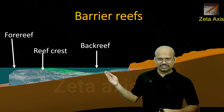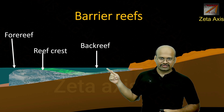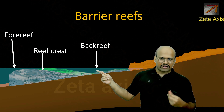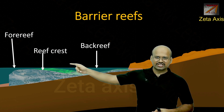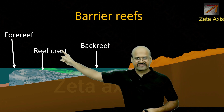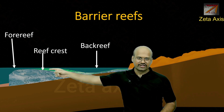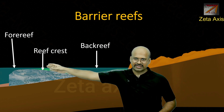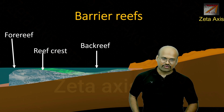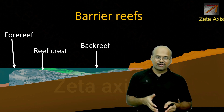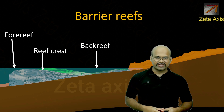In the reef structure classification, the backward side toward the coast is called the back reef. The reef crest is where most corals are concentrated, and then there is the fore reef — the forward, oceanward side of the reef.